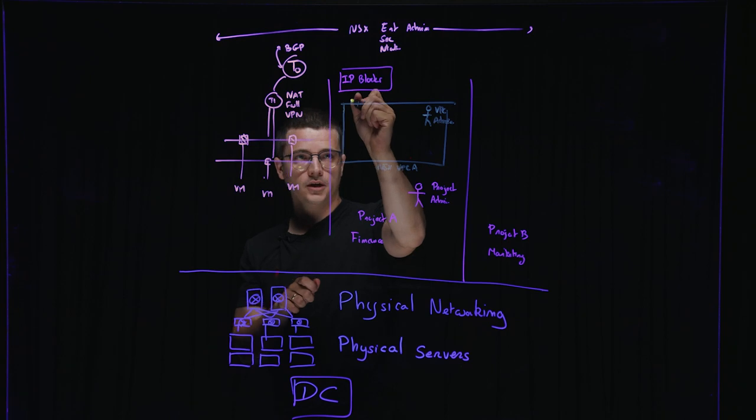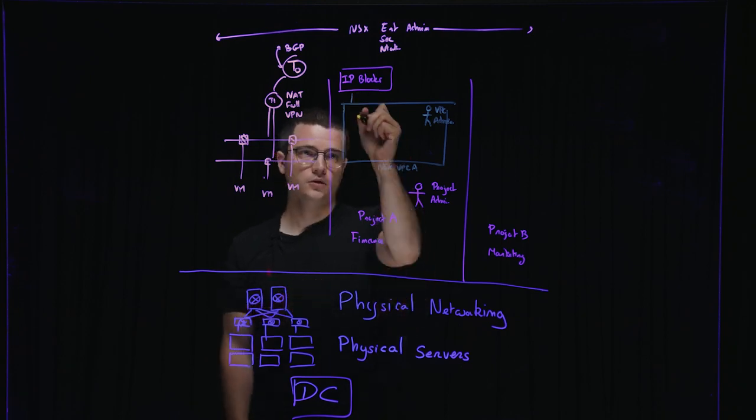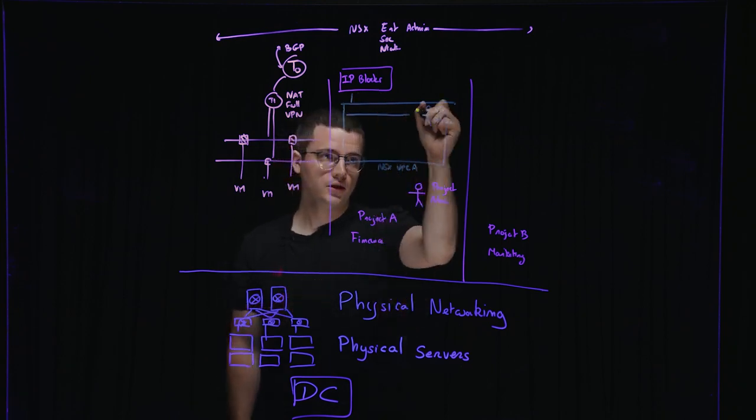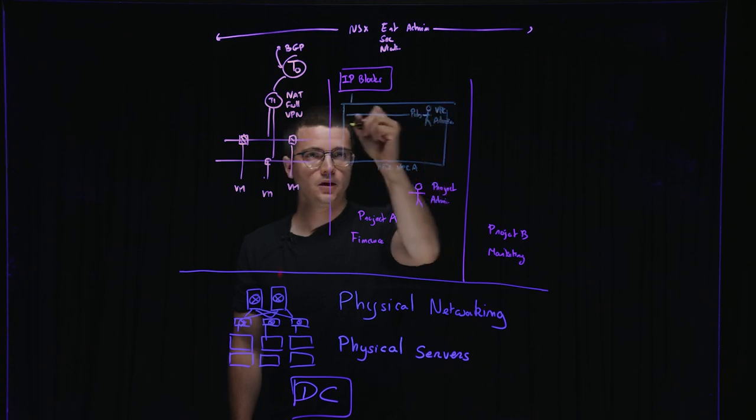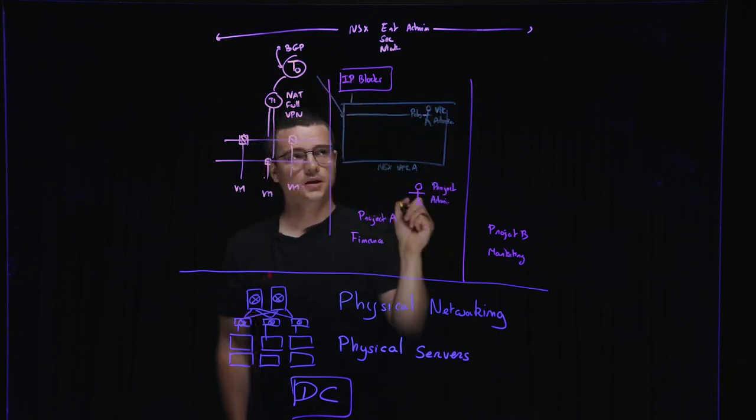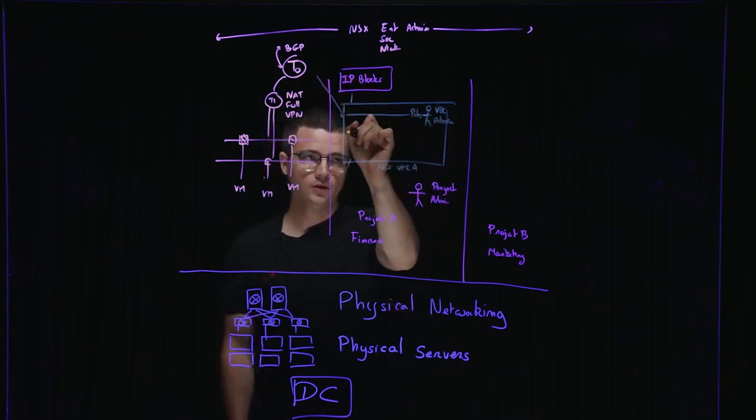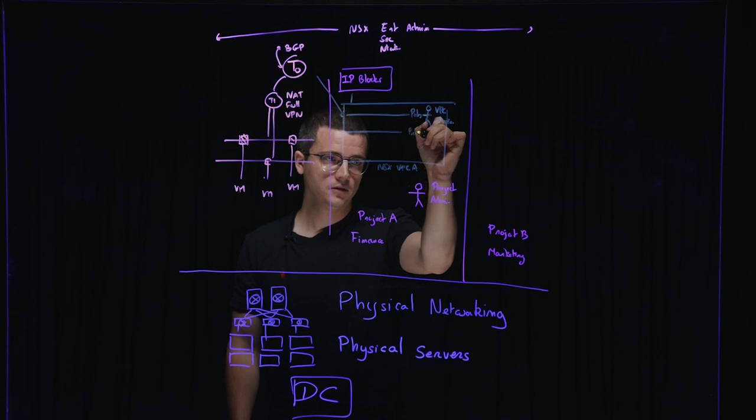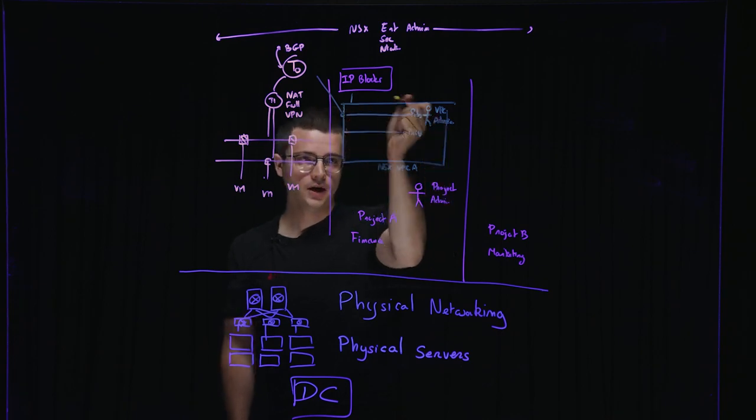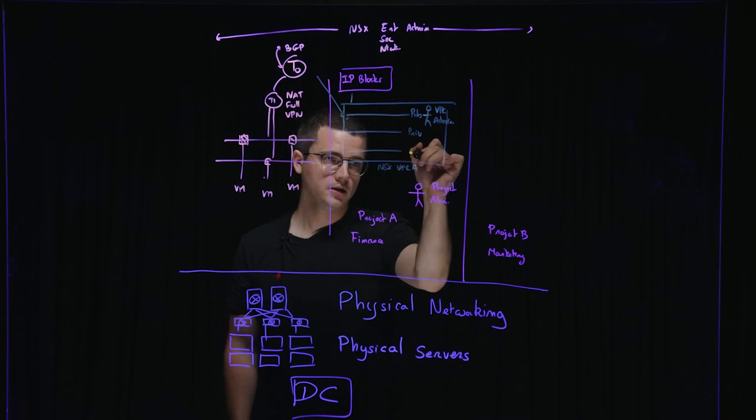And this VPC admin can configure things within the VPC. So we will be able to leverage the IP blocks which have been allocated in order to create public subnets. Those public subnets would be typically routed to the outside world. Private subnets, which are not advertised outside of the VPC, but which are routed inside the VPC. Or isolated subnets.